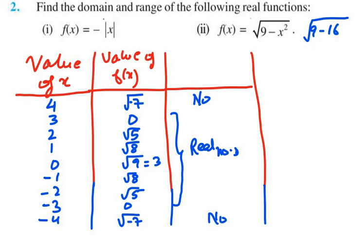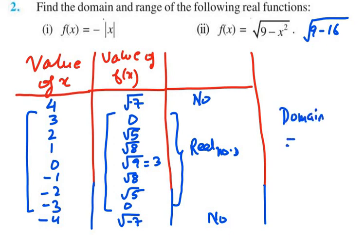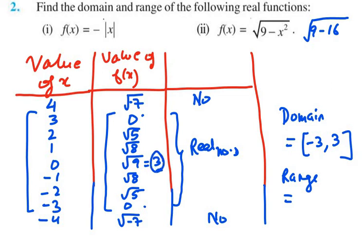So f(x) is between 0 and 3, and x is between minus 3 and 3. Therefore, the domain is [minus 3, 3]. For the range, the values go from 0 to a maximum of 3, so the range is [0, 3]. This is the answer for question number 2.